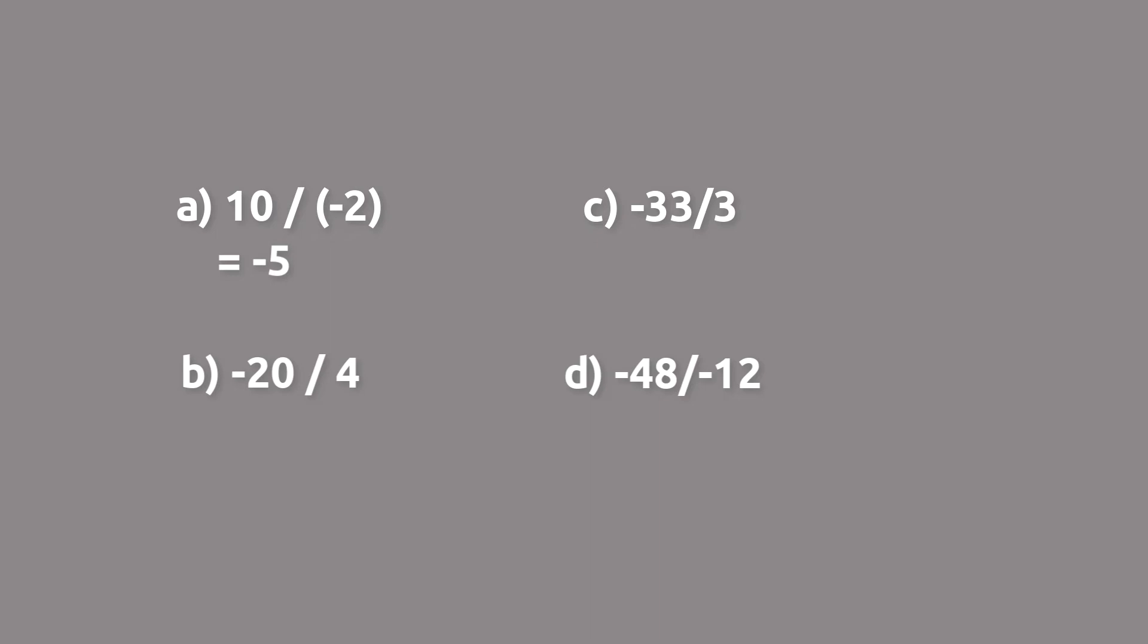With part b, again, one is negative, one is positive, so we know the solution is going to be negative. 20 divided by 4 is 5. So negative 20 divided by 4 is negative 5.